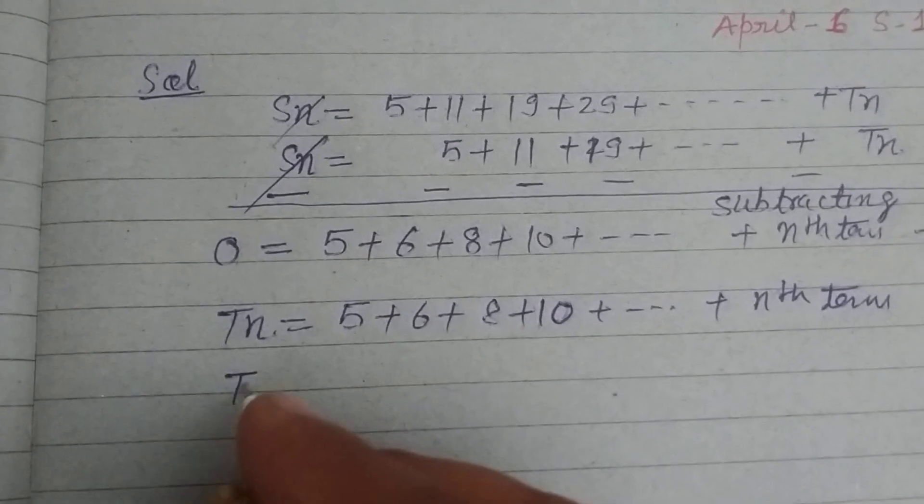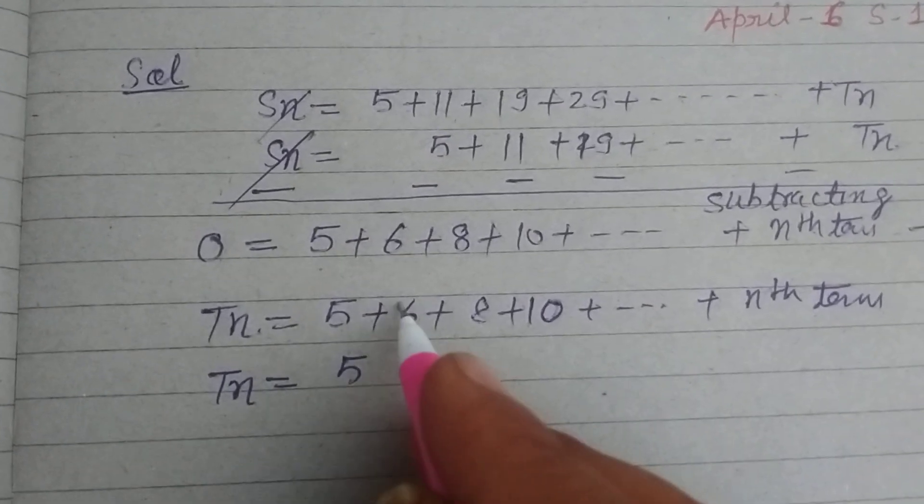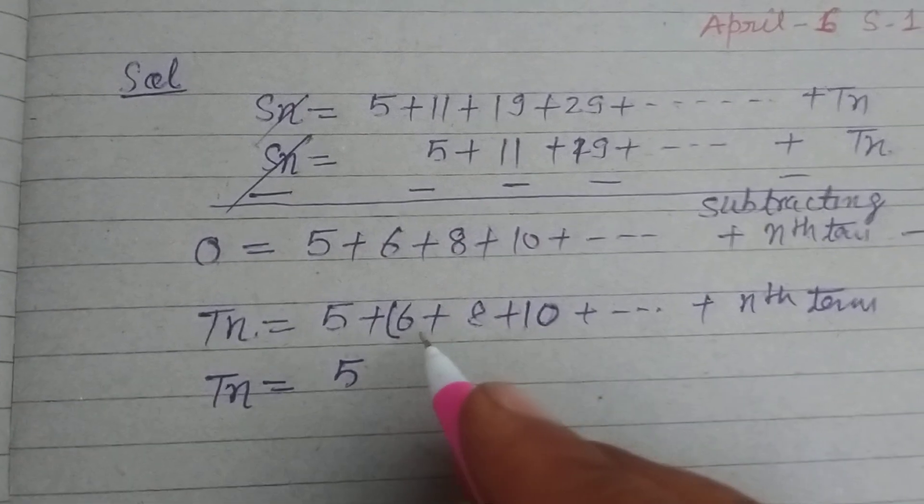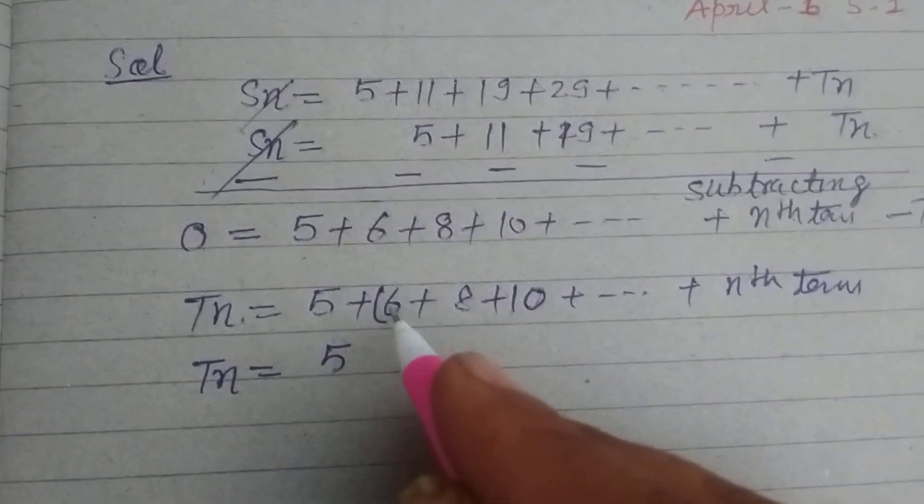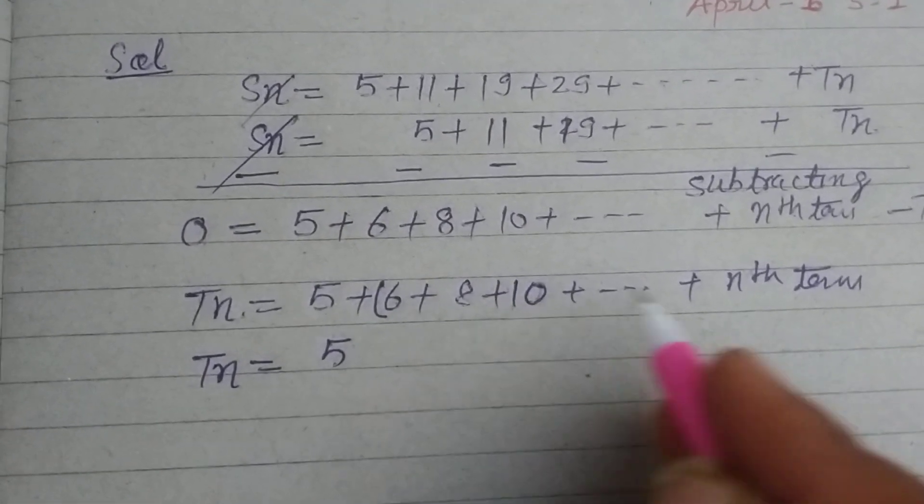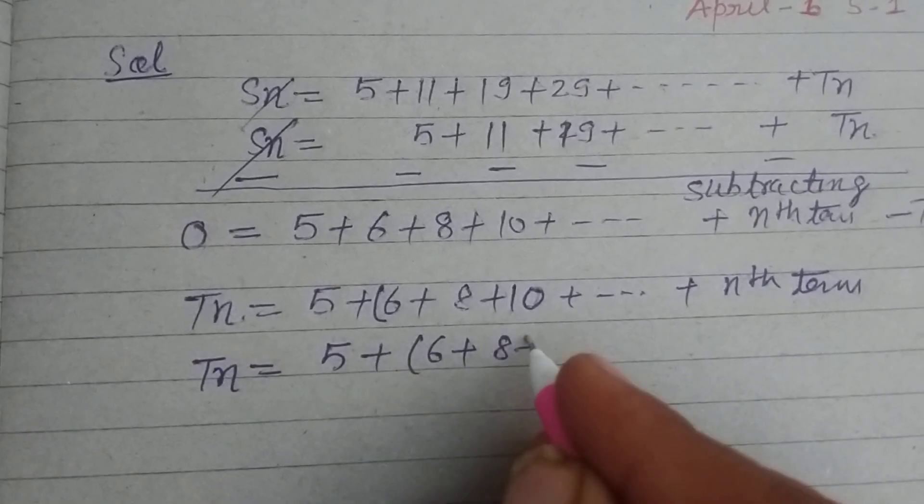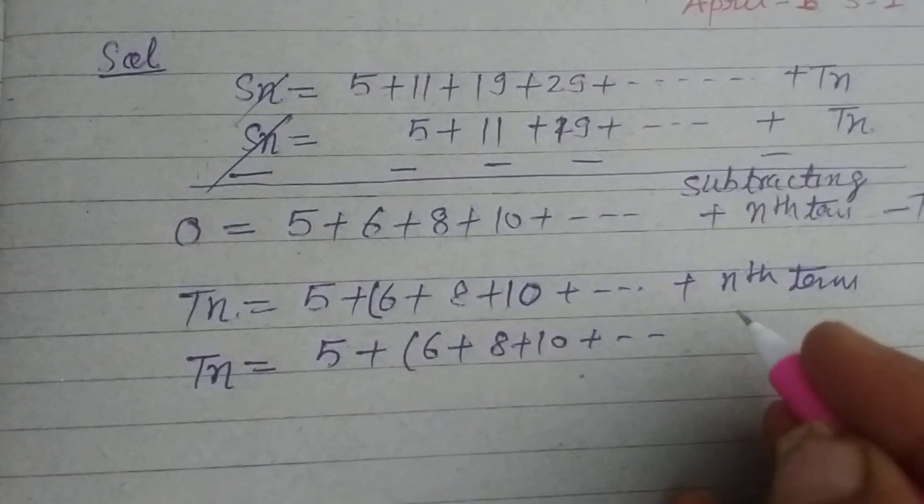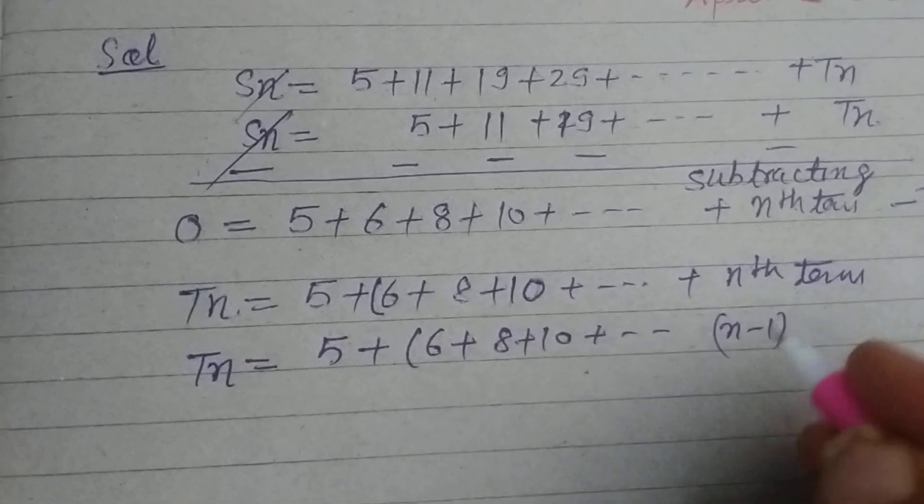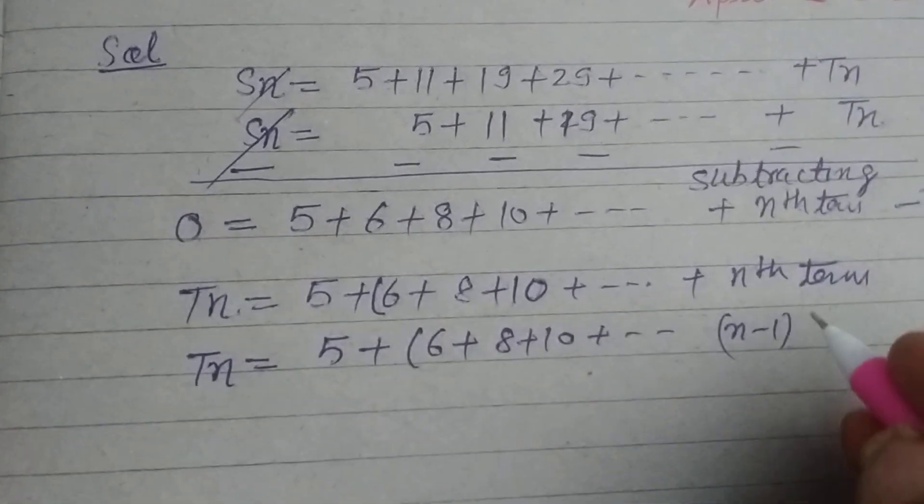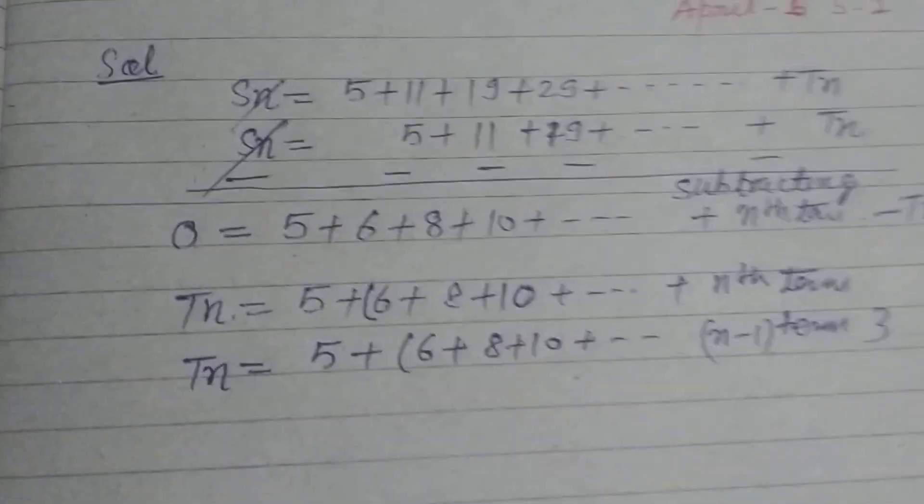Because one term is reduced here. Now TN equals, here arithmetic progression is starting from the second term: 6 plus 8 plus 10 and so on. So we take 6 plus 8 plus 10 up to N minus 1 terms because one term is reduced here.